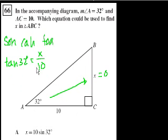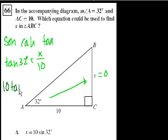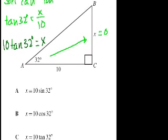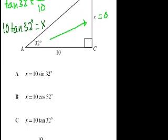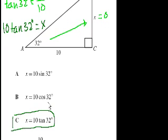If we say the tangent of 32 degrees equals the opposite side, which is x, over the adjacent side, which is 10, and then if we multiply both sides by 10, we get 10 tangent of 32 degrees is equal to x. And that's choice C — x is equal to 10 tangent of 32 degrees.